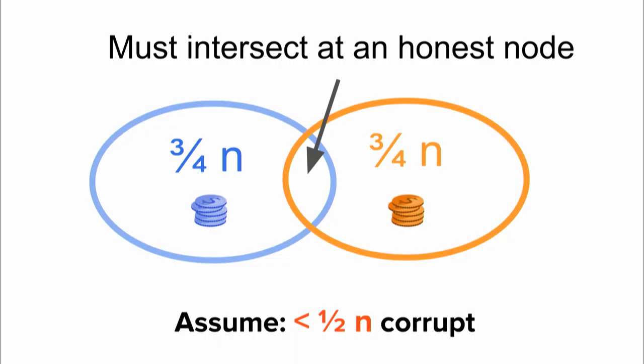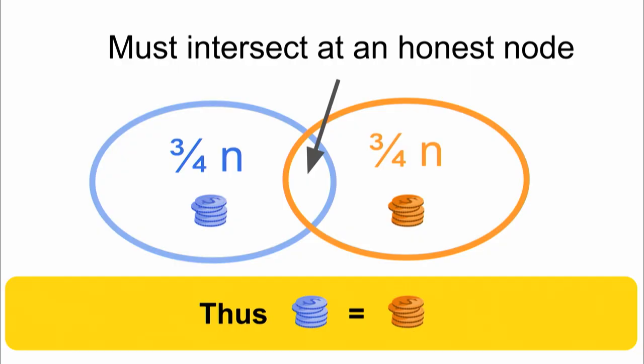With this important invariant I can give you an extremely simple consistency proof. In this scenario both the blue transaction and the orange transaction are both notarized, and I want to prove that they're the same transaction. I'm going to make the assumption that the set of corrupt nodes is a minority — less than half. The claim is that the intersection of the blue voters and the orange voters must be large — in fact it must contain at least half of the nodes — and if the adversary controls less than half, there must be an honest node in this intersection. Honest nodes vote uniquely at every sequence number, so the only explanation is that blue equals orange because the honest node in the middle voted for both — it has to be the same one. That's the consistency proof.